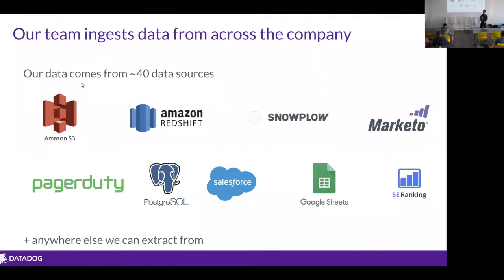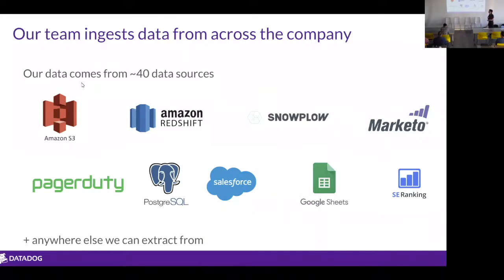In terms of data sources, we currently ingest data from more than 40 different sources. Obviously one of them is Snowplow, but we also get data from AWS S3, Redshift where other teams provide us with extracts for app usage, and different APIs like Salesforce or Marketo for marketing data. We also pull from PagerDuty and SE Ranking for SRE and search engine optimization data. The idea is to bring all these sources together and create value by integrating them.